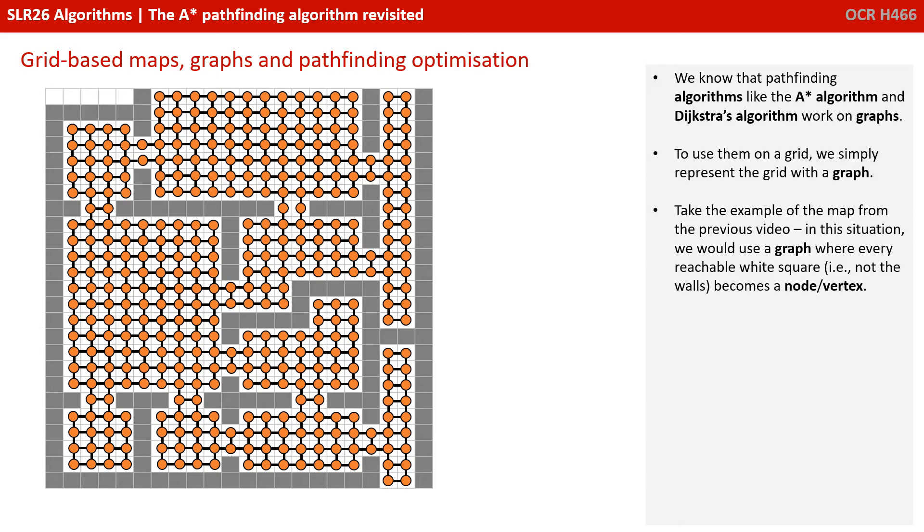We know that pathfinding algorithms like A-star and Dijkstra's work on graphs. To use them on a grid, we simply represent the grid with a graph. Take the example of the map from the previous video.